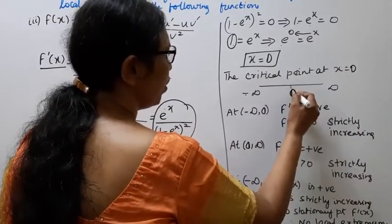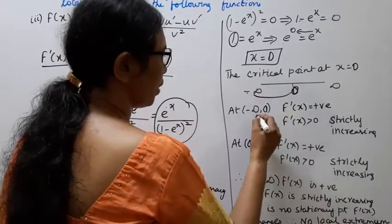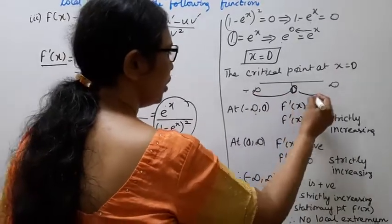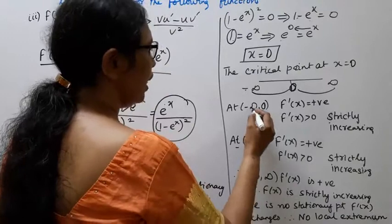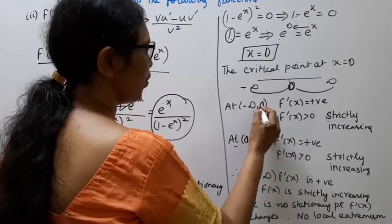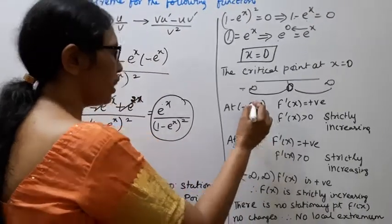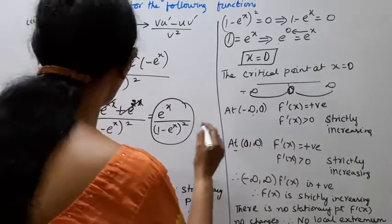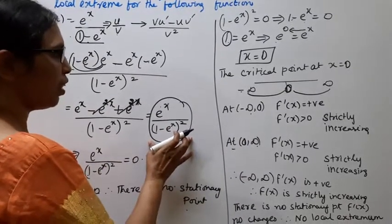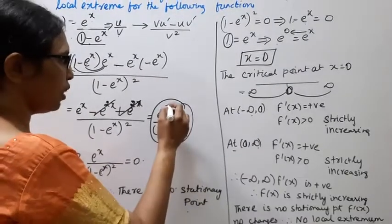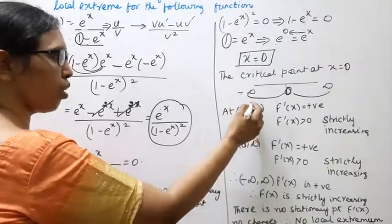So the critical point is at x = 0. The number line is divided from minus infinity to infinity with 0 as the dividing point. We consider the intervals (-∞, 0) and (0, ∞) to analyze the sign of f'(x).